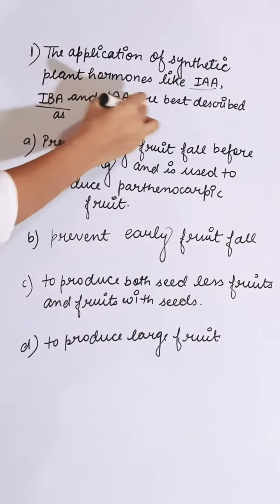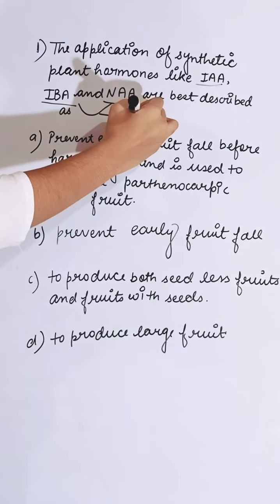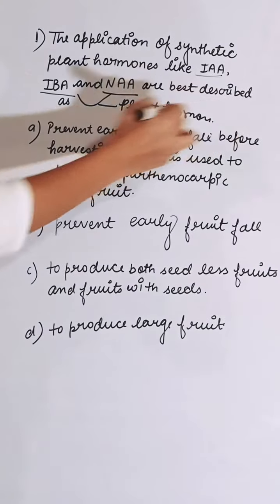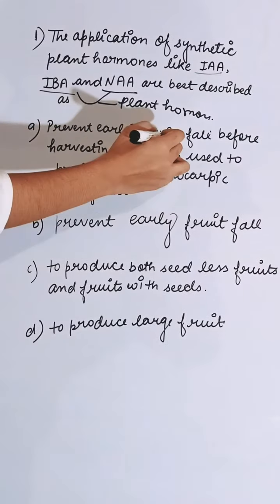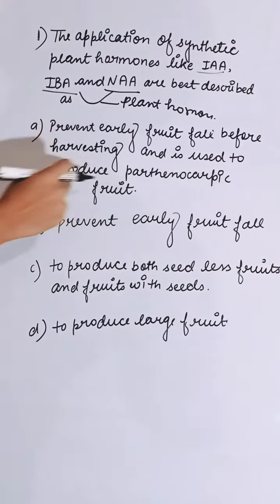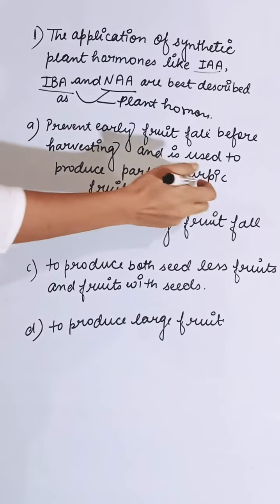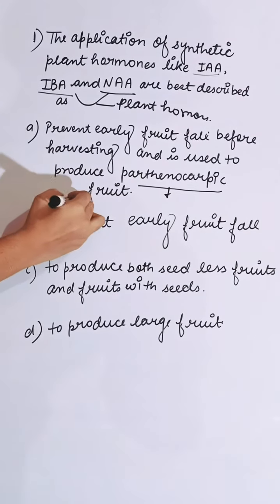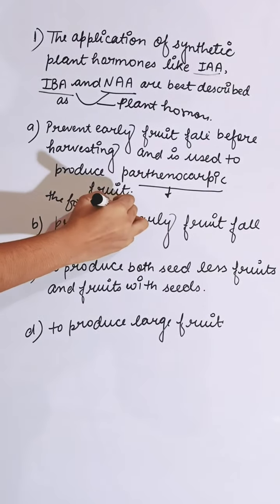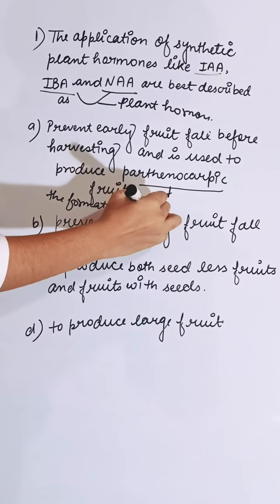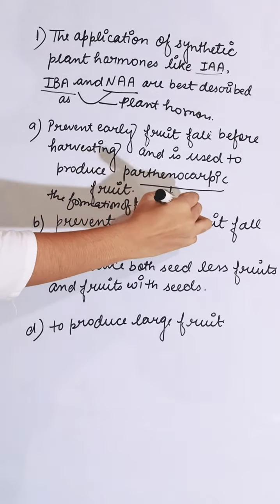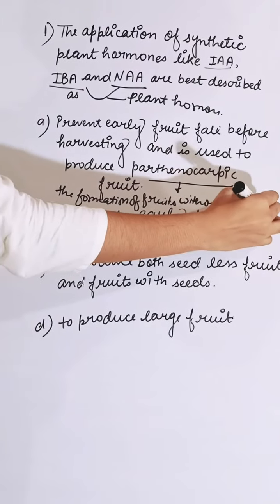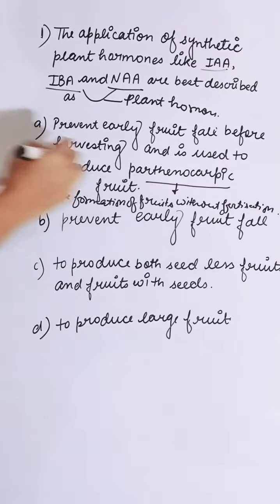IAA, IBA, and NAA are plant hormones which help prevent early fruit fall before harvesting and are used to produce parthenocarpic fruit. Parthenocarpic means the formation of fruits without fertilization. So the correct answer is option A.